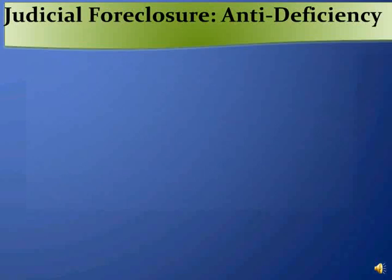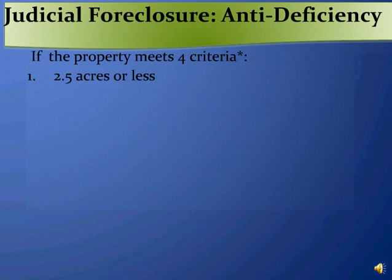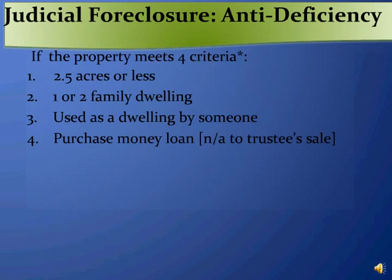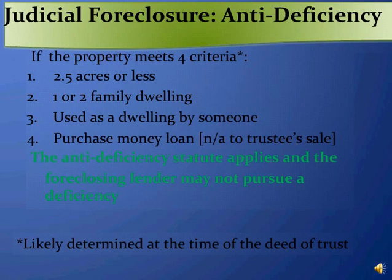In a judicial foreclosure, there are four criteria that must be met. The property must be two and a half acres or less, a one or two family dwelling actually used as a dwelling — in other words, qualifying property, just like in a trustee sale. But where a judicial foreclosure is involved, there's a fourth requirement: the loan must be a purchase money loan. If those four criteria are met, then the anti-deficiency statute applies and the foreclosing lender may not pursue a deficiency. Footnote: in the context of a judicial foreclosure, those four criteria are likely analyzed at the time the deed of trust is given.